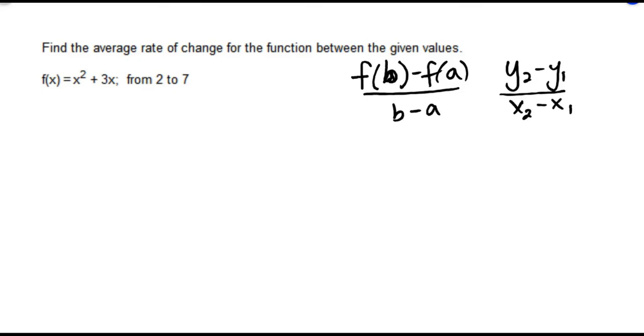And the main difference is that with the slope formula, we're using two points on a line. And with the average rate of change, our two points are on this function here, which doesn't necessarily have to be a line.